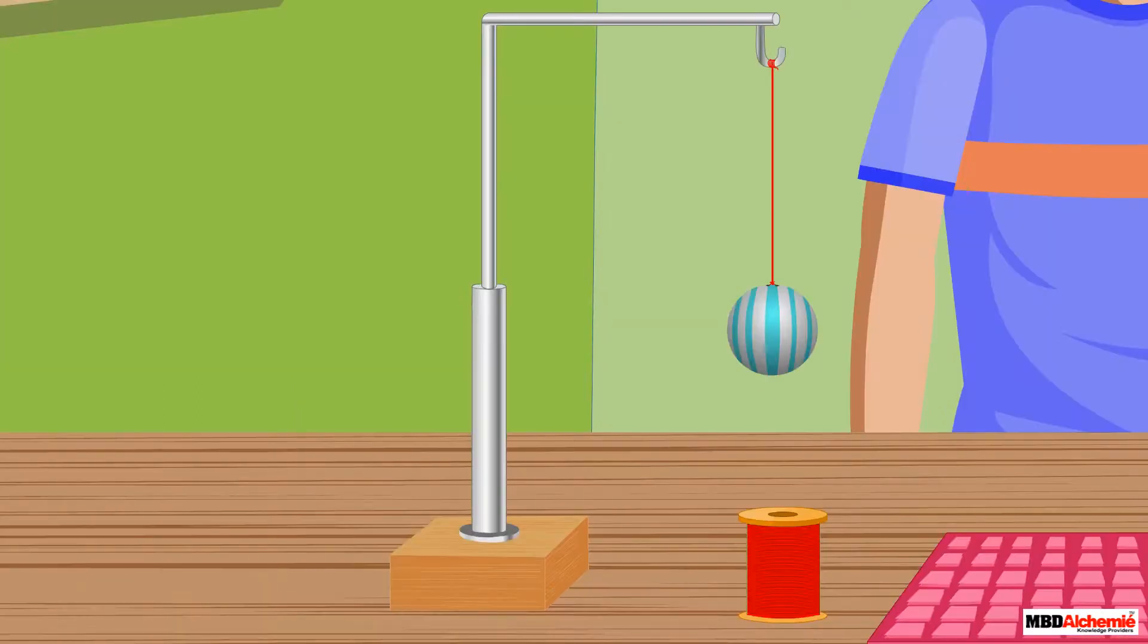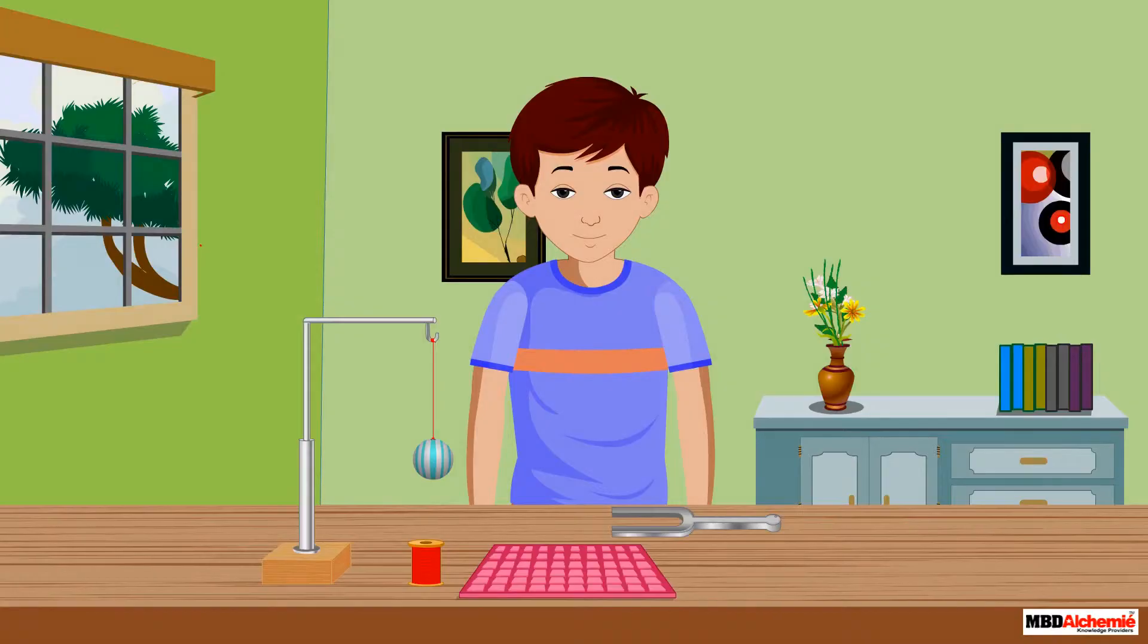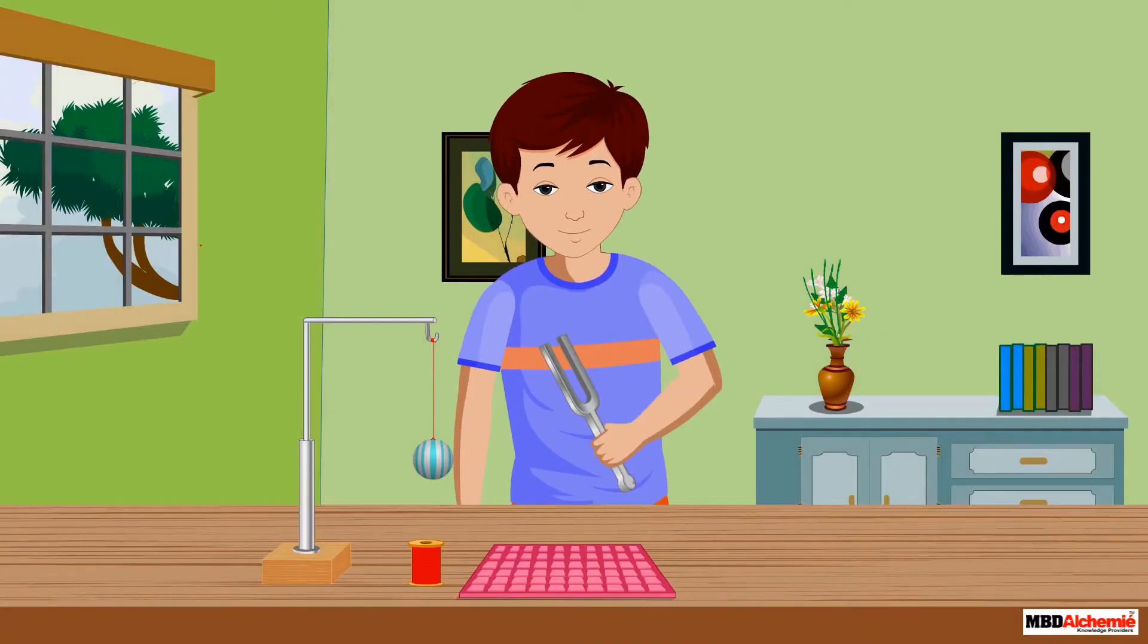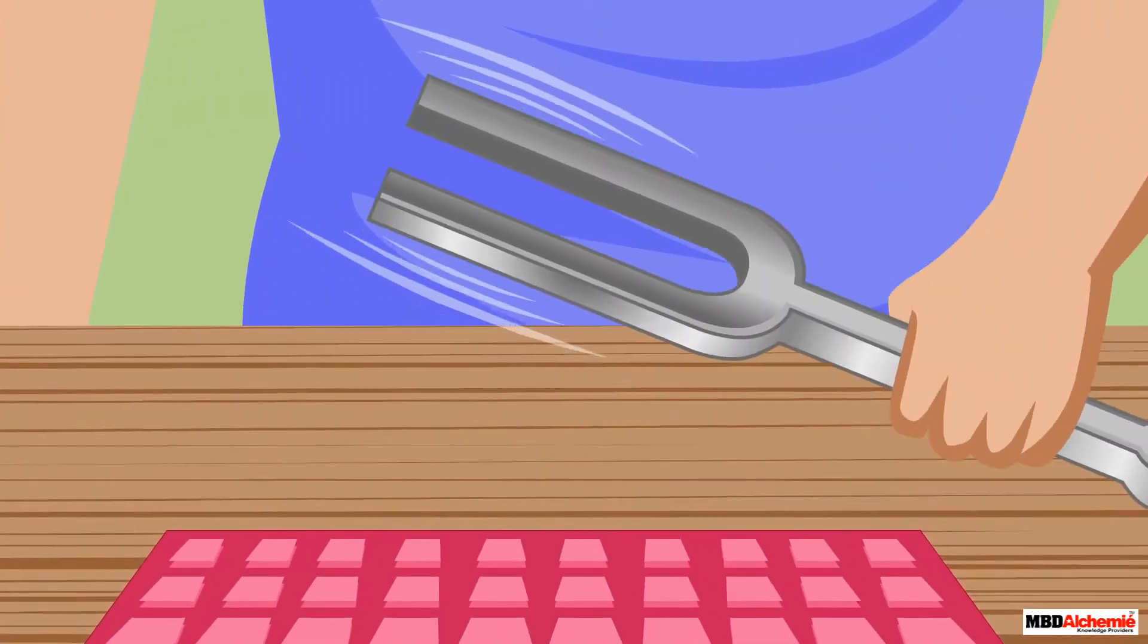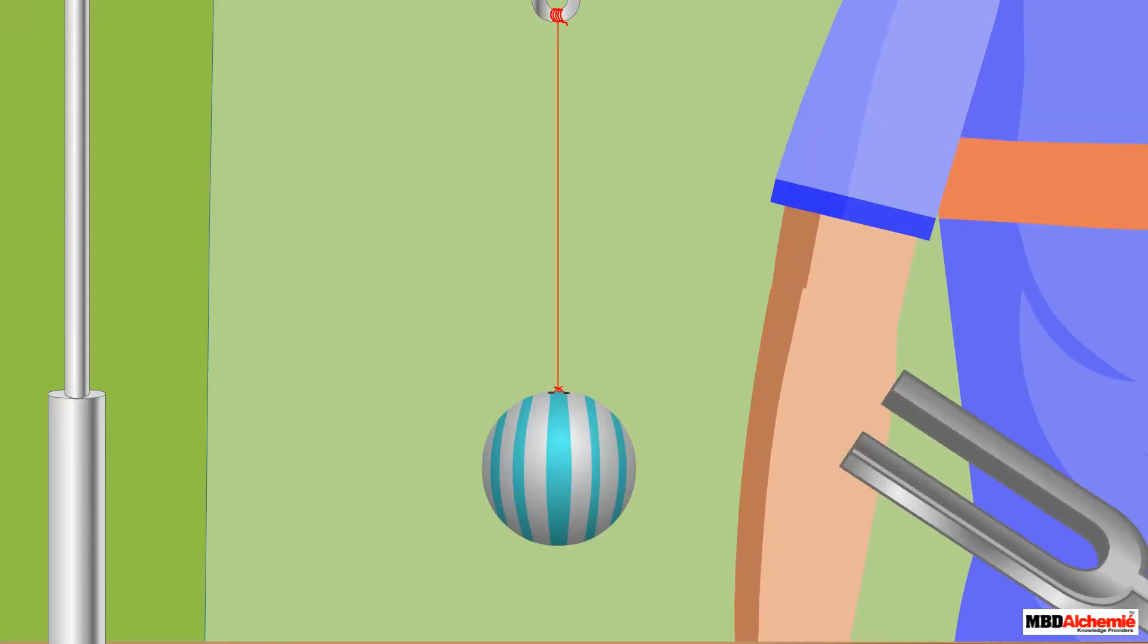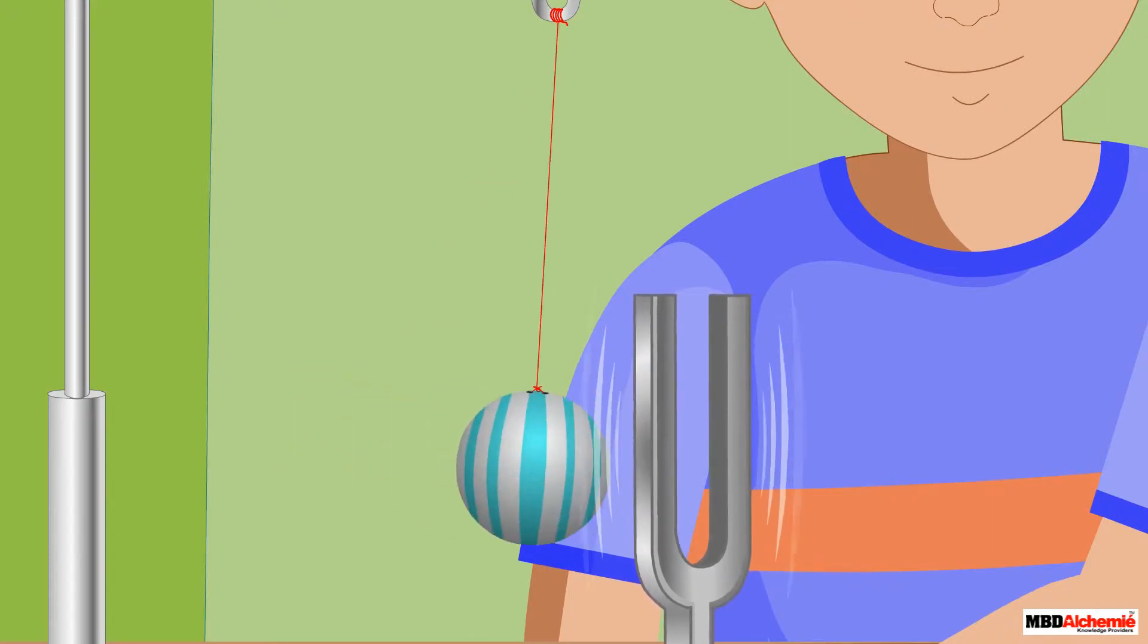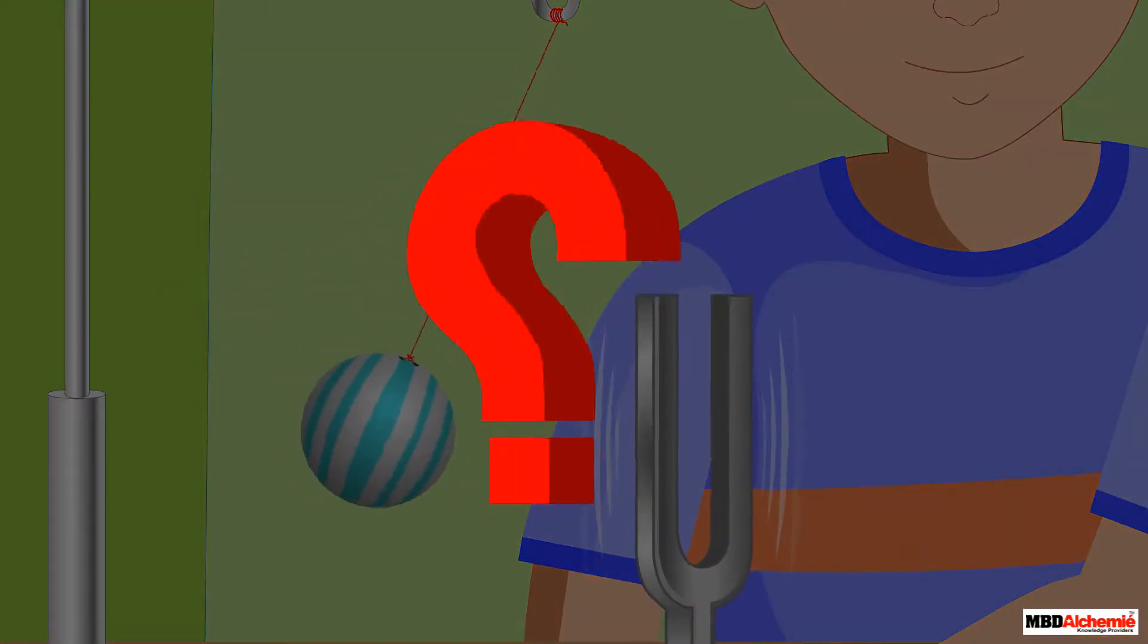First, suspend the small plastic ball from a support with the help of the thread as shown. Next, take the tuning fork and strike its prong on the rubber pad. Now touch the ball gently with the prong of this tuning fork. What do you observe?